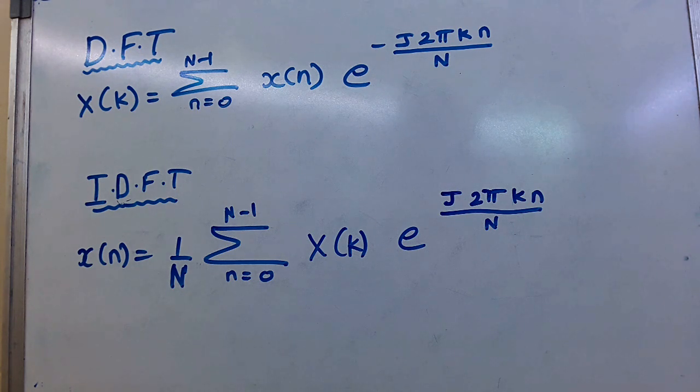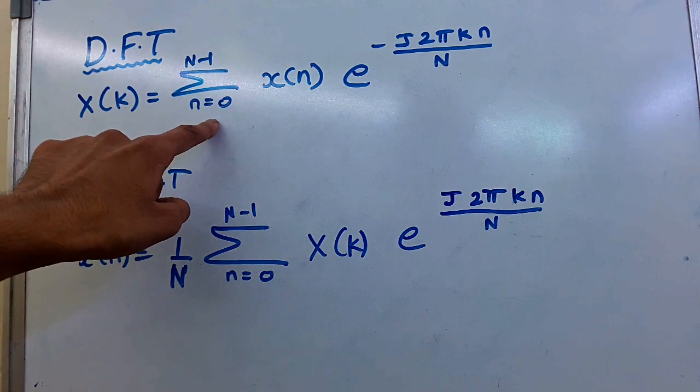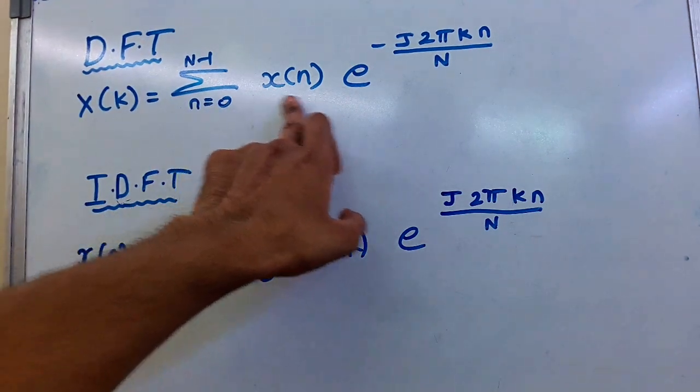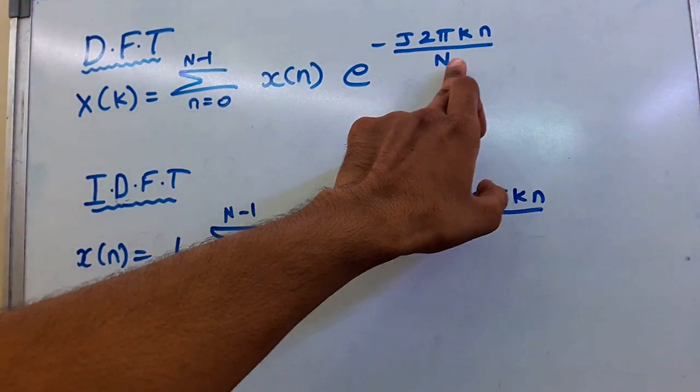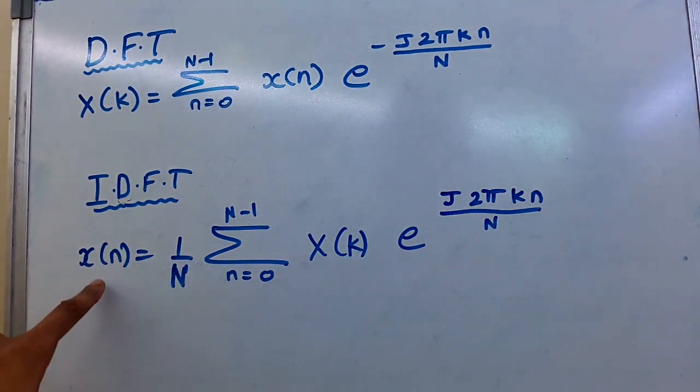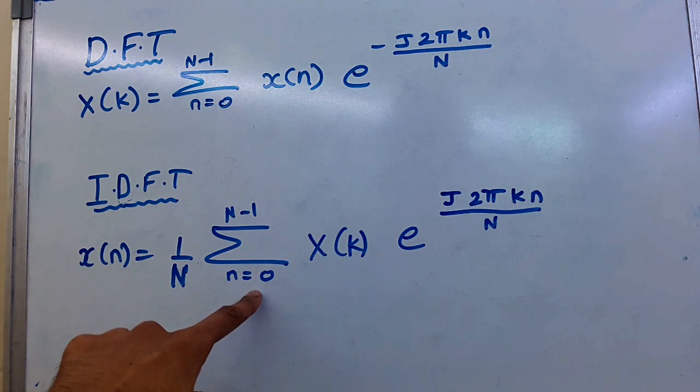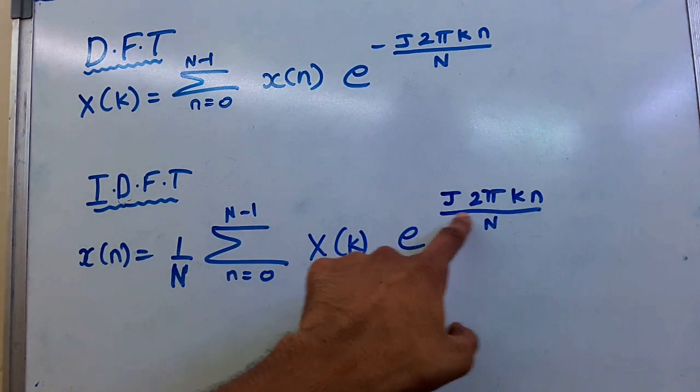Next topic: these two formulas. DFT formula: x of k equals summation n equals 0 to N minus 1 of x of n times e raised to minus j 2 pi k n by N. IDFT formula: x of n equals 1 by N summation k equals 0 to N minus 1 of x of k times e raised to j 2 pi k n by N.